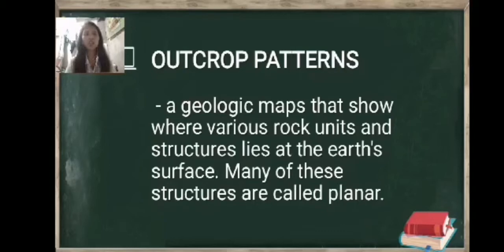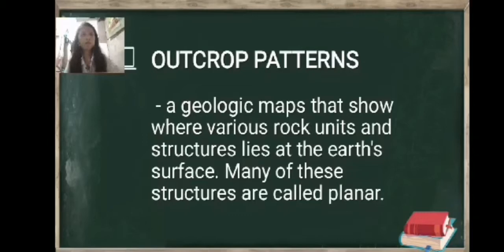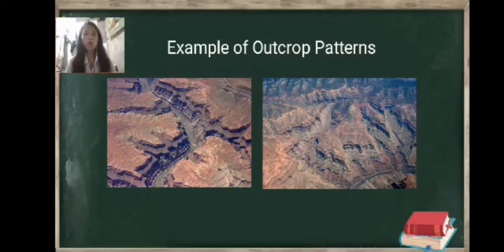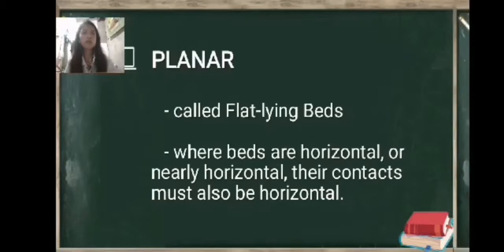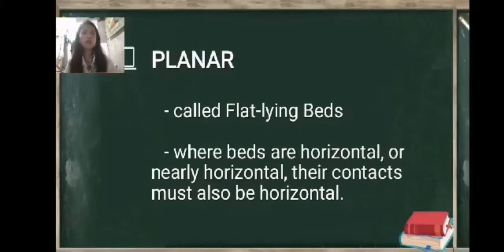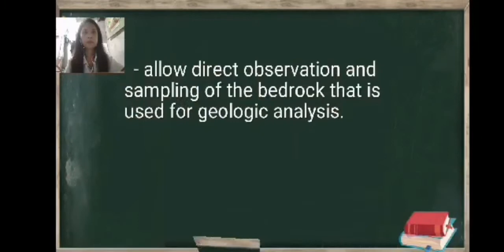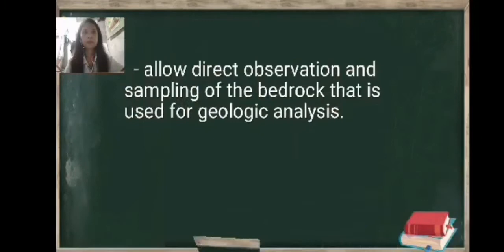Outcrop patterns. A geologic map that shows where various rock units and structures lie at the earth's surface. Many of these structures are called planar. Example of outcrop patterns. Now, what is planar? Planar is called flat-lying beds. Where beds are horizontal or nearly horizontal, their contacts must also be horizontal. It allows direct observation and sampling of the bedrock that is used for geologic analysis.